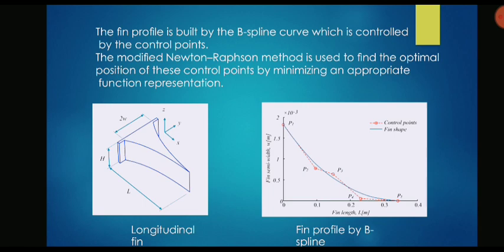The control points will decide how the shape of the spline will run through. If you see in the right diagram the red dots are going to be the control points and the blue line is the fin shape. If I change the position of the control point ultimately the shape of the fin will also get changed.